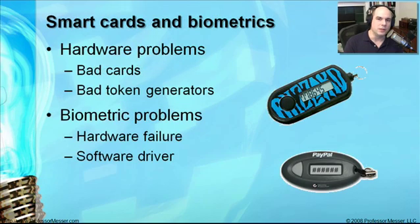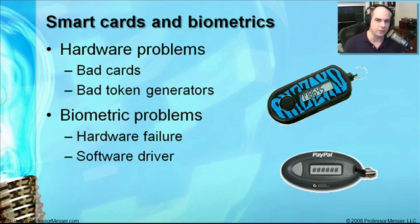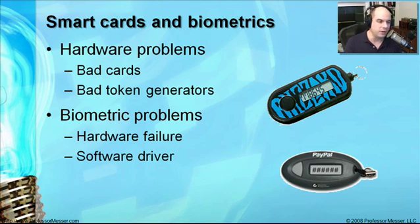We talked in an earlier video about multi-factor authentication — having multiple requirements that someone would need: a username, a password, and then perhaps something they have, like a smart card or a token generator. Well, that works great until you lose the token generator, or until the battery in the token generator goes bad and you can no longer get numbers out of it, or what if you lose your smart card? There needs to be a process in place to either get you a new smart card or a working token generator.